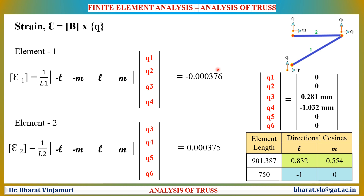Similarly, for element number 2, the strain displacement matrix is (1/L₂) × [−L, −M, L, M]. For element 2, L = −1 and M = 0, giving the matrix values 1, 0, −1, 0. The displacement vectors for element 2 are Q3, Q4, Q5, Q6, obtained from the displacement vector table. By multiplying these values, we get the strain for element 2.